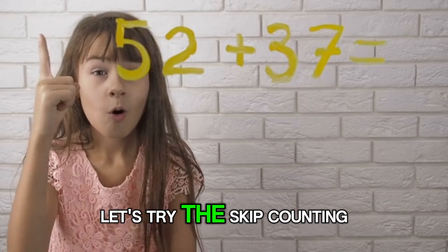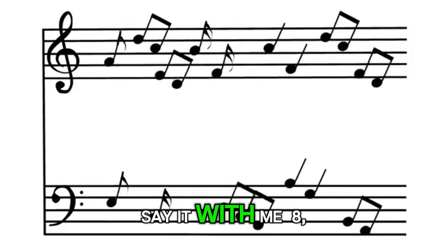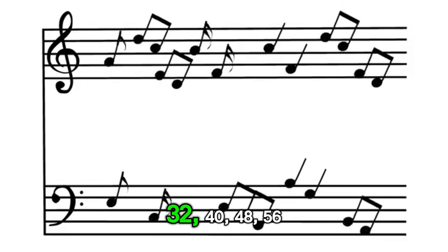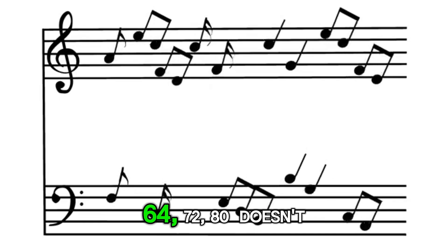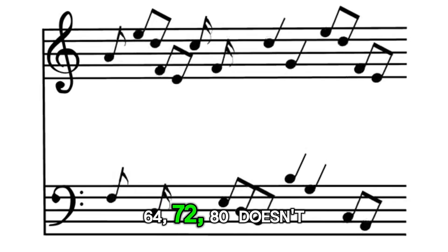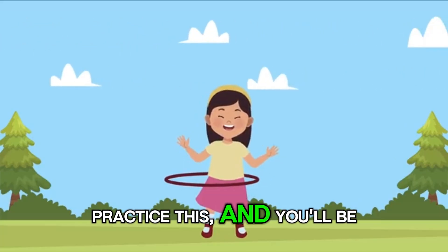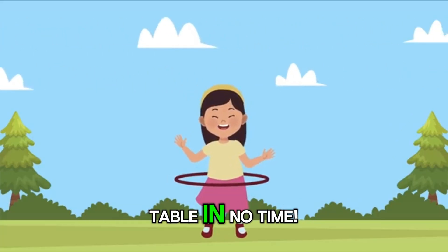Now, let's try the skip counting method. Say it with me: eight, sixteen, twenty-four, thirty-two, forty, forty-eight, fifty-six, sixty-four, seventy-two, eighty. Doesn't that sound like a fun rhythm? Practice this, and you'll be zipping through the eight times table in no time.